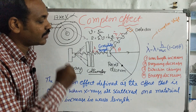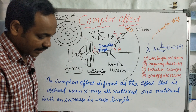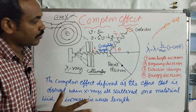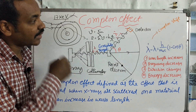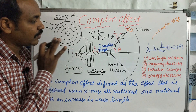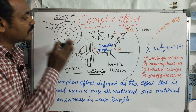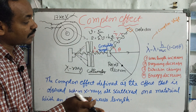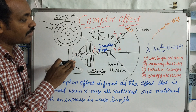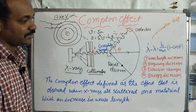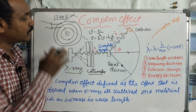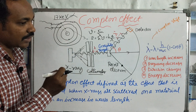Now we observe that the photoelectric effect is not happening here. In the Compton Effect, the photon interacts with the electron. What happens to the wavelength of the scattered photon? We have to observe the photon behavior in this interaction.